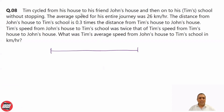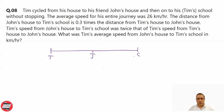Tim cycles from his house to John's house. So let's label: Tim's house, John's house, and then to his school — let's call the school S.